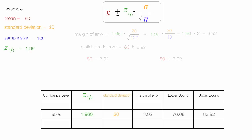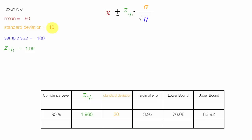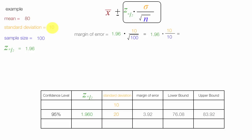Now I'm going to change the standard deviation to 10 and make the same calculations again. The margin of error equals 1.96 times 10, divided by the square root of 100, which equals 1.96 times 10 divided by 10, which equals 1.96 times 1, which equals 1.96.